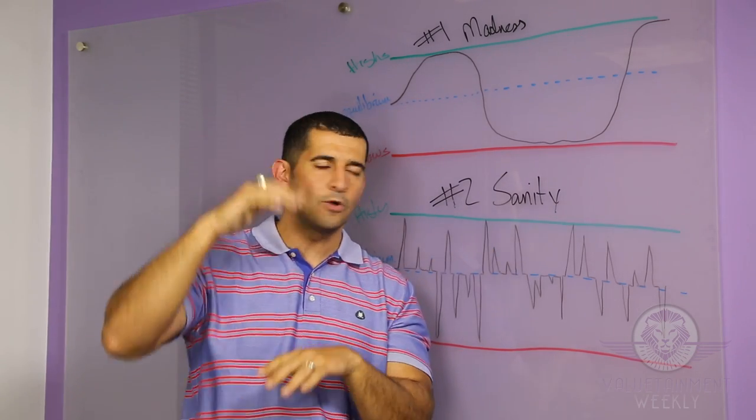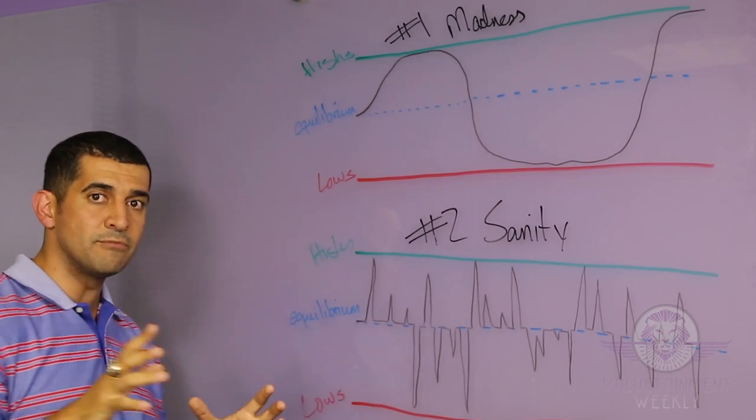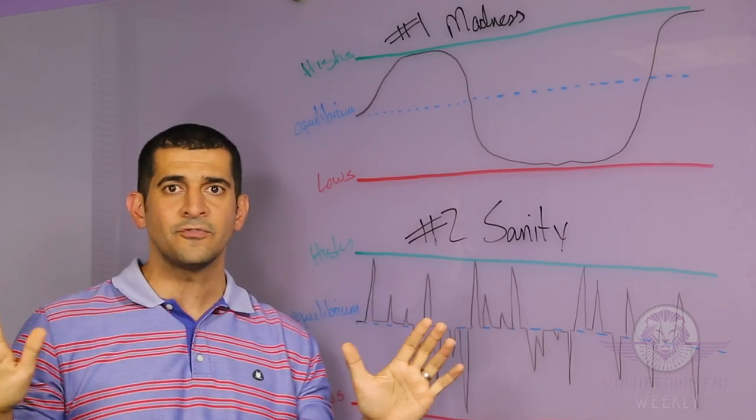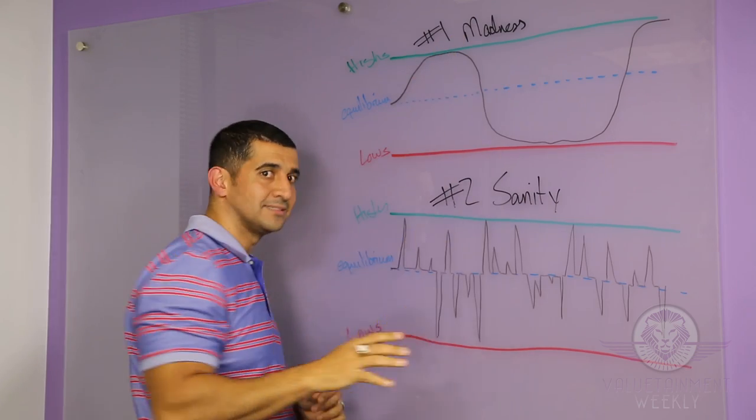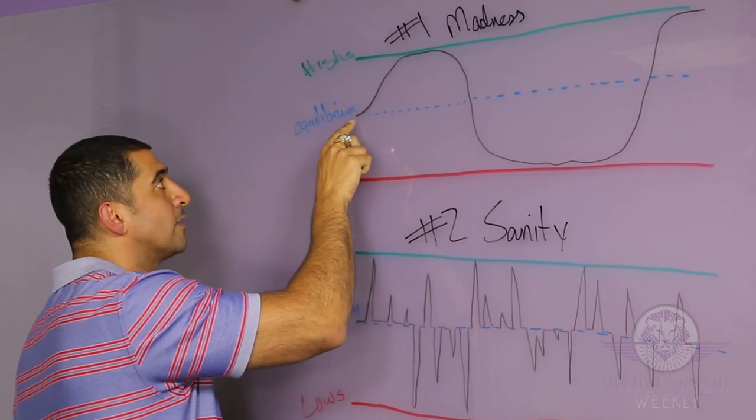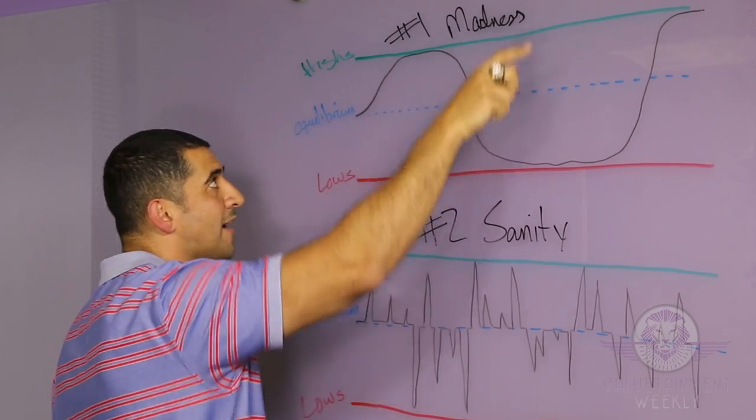Life is rarely in the middle. It's normally highs and lows of life, and I've made two illustrations. This is what I've seen - we've studied a lot of different people over the years. I've noticed the formula for madness is very simple. This is life: highs and lows.